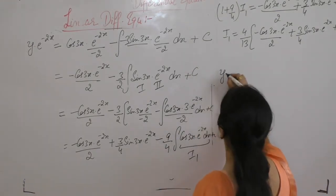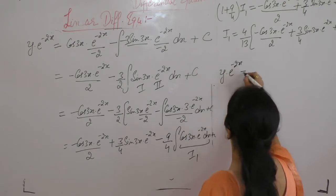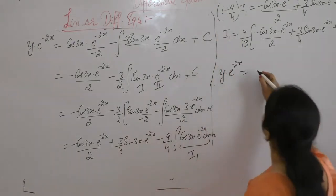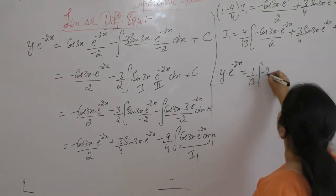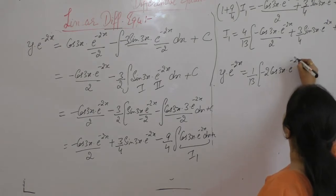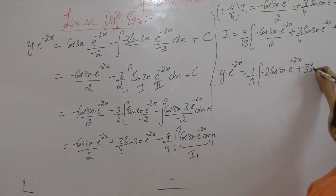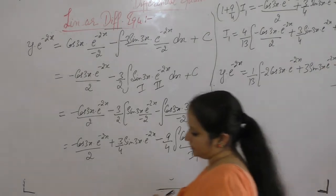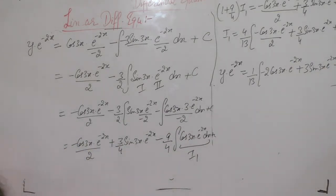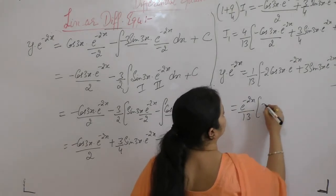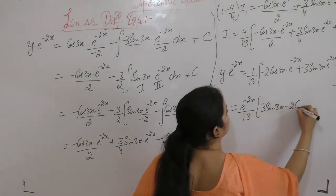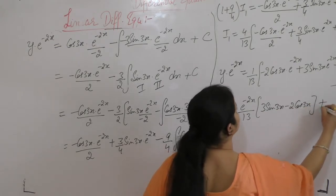So put this value of I1. We get y · e^(-2x) equals 1 by 13 times minus 2·cos(3x) · e^(-2x) plus 3·sin(3x) · e^(-2x) plus c. Taking e^(-2x) common, y · e^(-2x) gives us 3·sin(3x) minus 2·cos(3x) plus c.